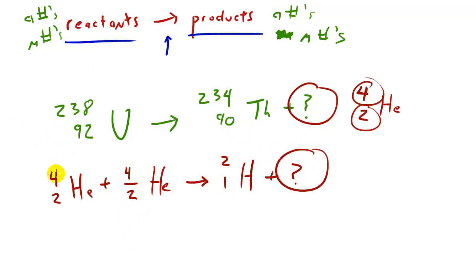So what you need to do is you need to add up 4 and 4, which is 8, and you subtract 2, so you get 6, and you add up 2 and 2, which is 4, and you subtract 1, which is 3. So 6, 3, any element with 3 protons in the nucleus is lithium. So the missing element is 6, 3, lithium. Pretty cool, huh?